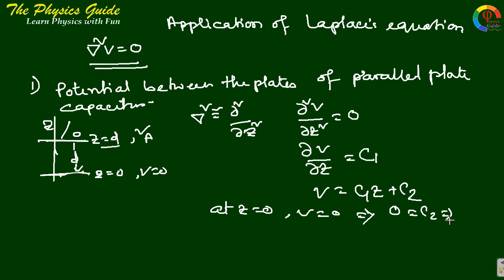The second condition is at z equals to d, V equals to V_a. So V_a equals to c1 d plus 0. This implies c1 equals to V_a by d.